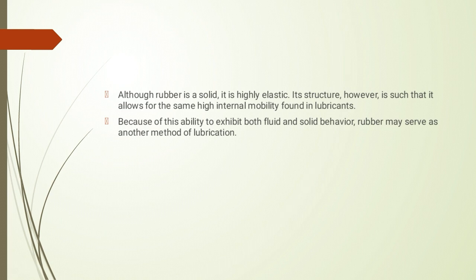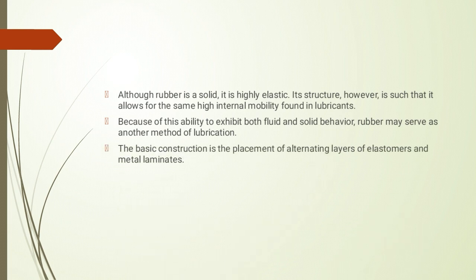जैसा previous slide में बताया, fluid type lubricants जैसे grease में internal mobility रहती है जिसमें molecular structure एक shape से दूसरी shape लेने में allow करता है। यहाँ पर rubber solid material है लेकिन यह भी lubricant की तरह behave करेगा क्योंकि rubber की property elastic nature है — वो structure भी internal mobility जैसी quality provide करेगा। Because of this ability to exhibit both fluid and solid behavior, rubber may serve as another method of lubrication.